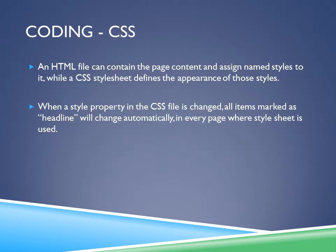Coding: CSS. An HTML file can contain the page content and assign named styles to it, while a CSS stylesheet defines the appearance of those styles. When a style property in the CSS file is changed, all items marked with that style will change automatically on every page where the stylesheet is used. For example, you could set a background color or image, such as a black picture with a business's logo.